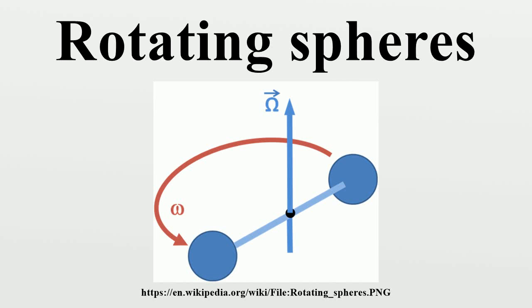Isaac Newton's rotating spheres argument attempts to demonstrate that true rotational motion can be defined by observing the tension in the string joining two identical spheres.